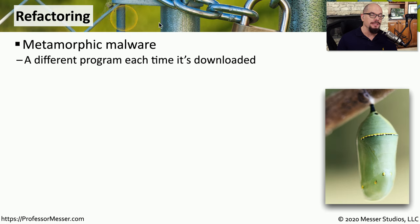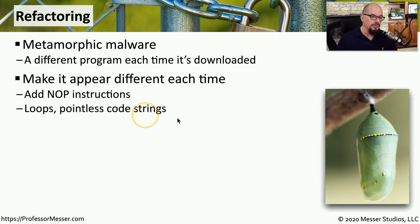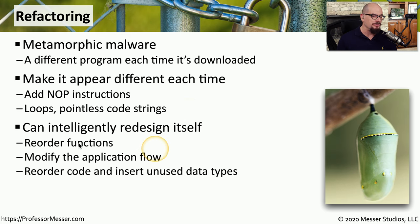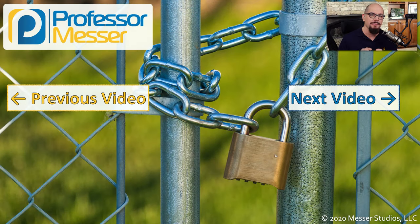Another way malware authors evade antivirus software is through refactoring, also called metamorphic malware. When your system downloads this malware, it downloads a unique version that won't match any existing signatures. The malware author adds code such as no-op instructions — no operation instructions that do nothing but make the malware look different — or adds loops and pointless code strings so no signature can match the executable. Refactoring can also reorder functions, modify application flow, or reorder code so it differs from any known signature. Stopping this kind of malware requires layered approaches to identify and block anything that has been refactored.